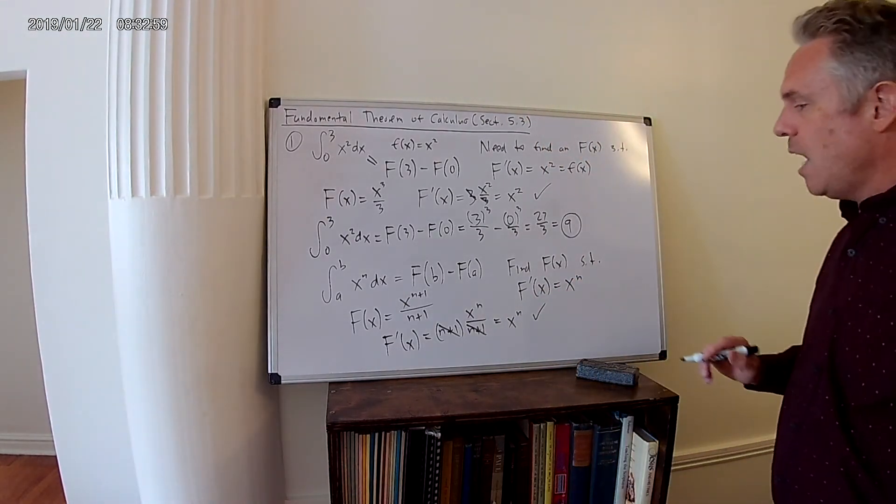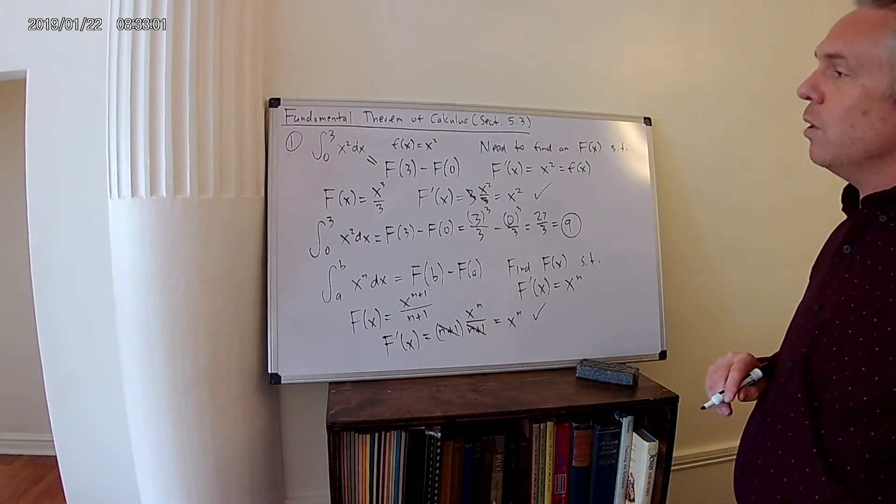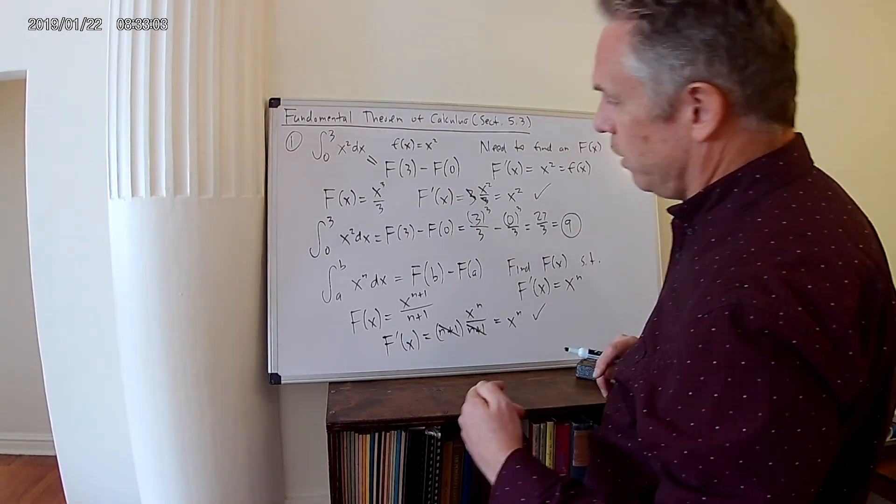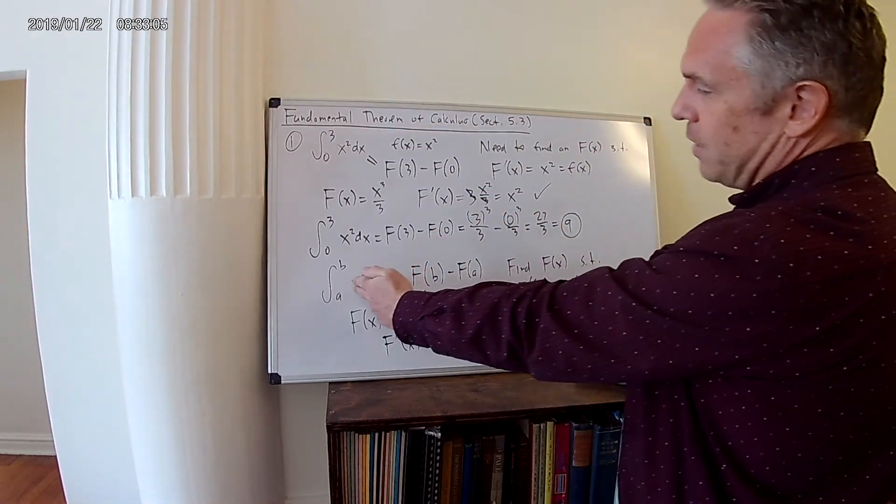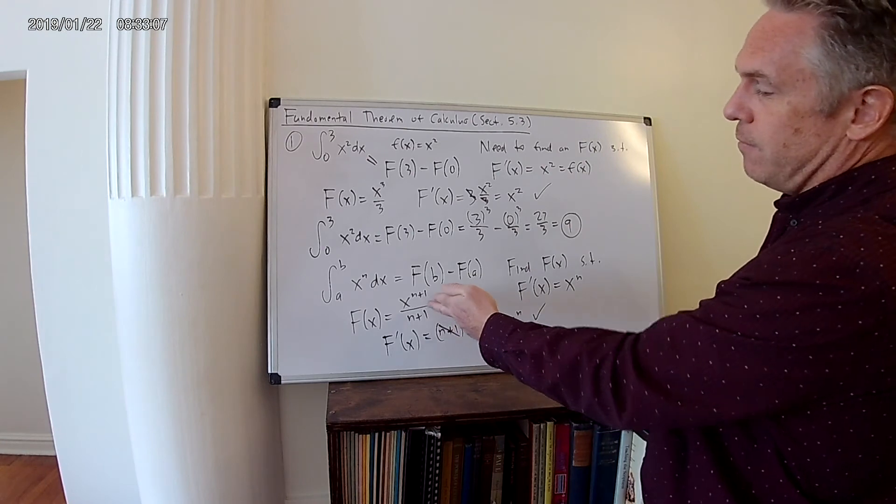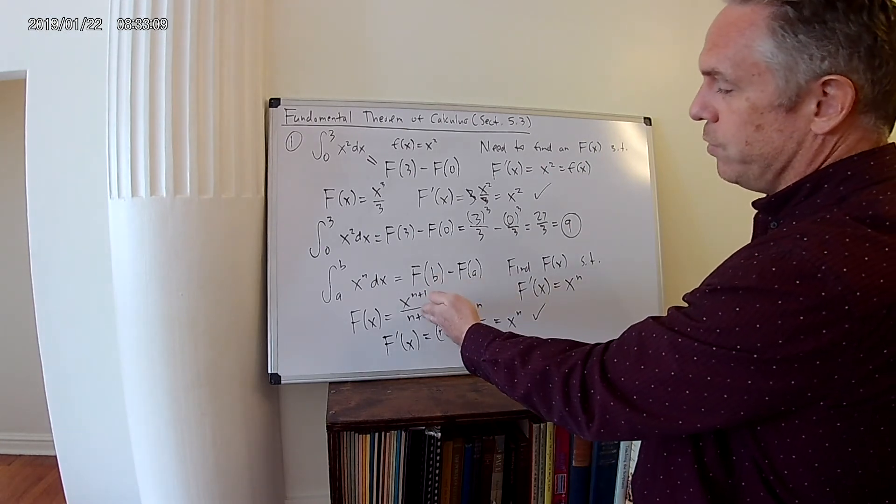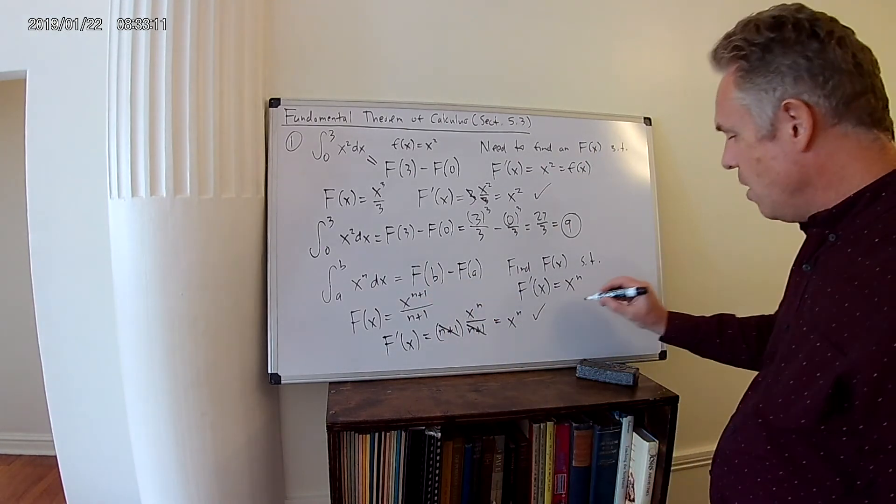All right, I'm happy about that, because I've now found my antiderivative. So, more generally, if you had any function x to the n, the antiderivative of that function will always be x to the n+1 divided by n+1.